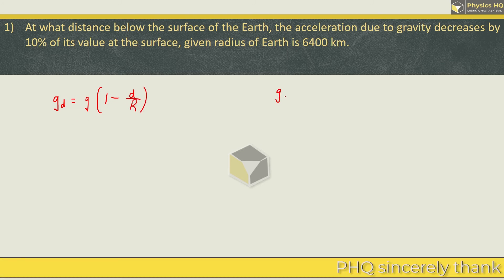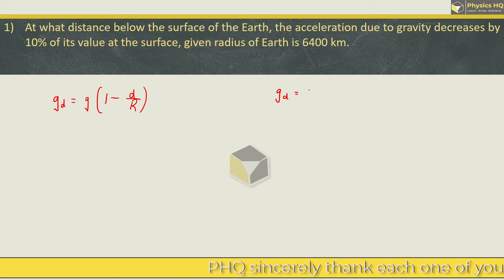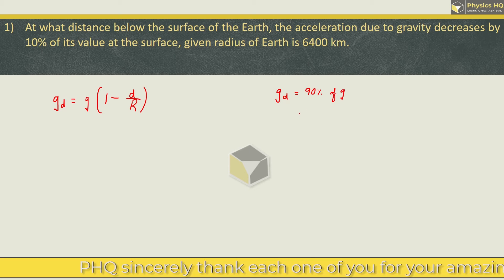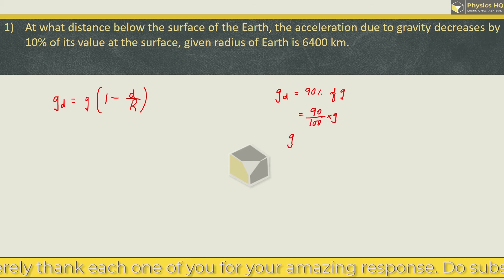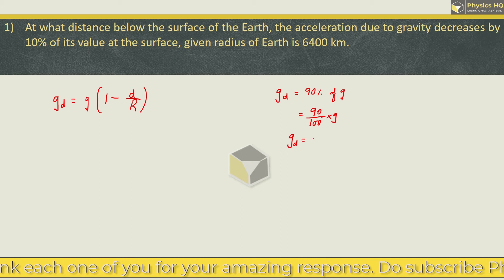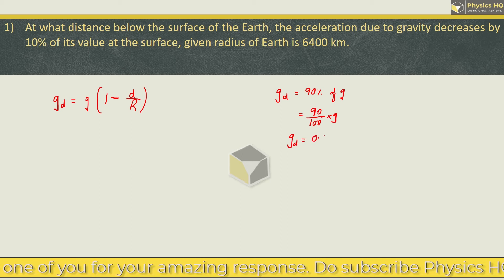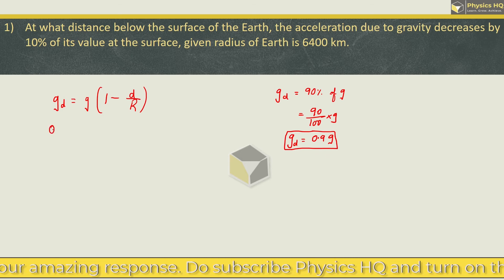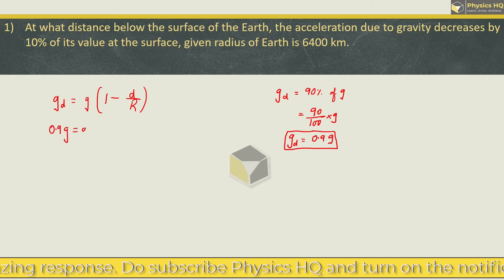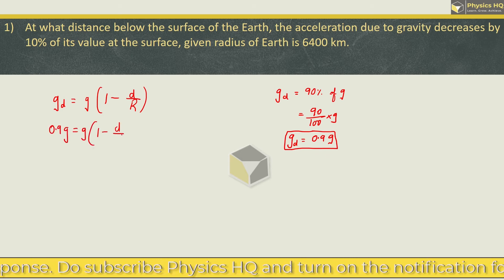Now they are saying that gravity at this depth is decreased by 10%, or you can say that gravity at this depth is 0.9 times the G. If we put it here, this is equal to 0.9G. This is equal to G times 1 minus D by R.